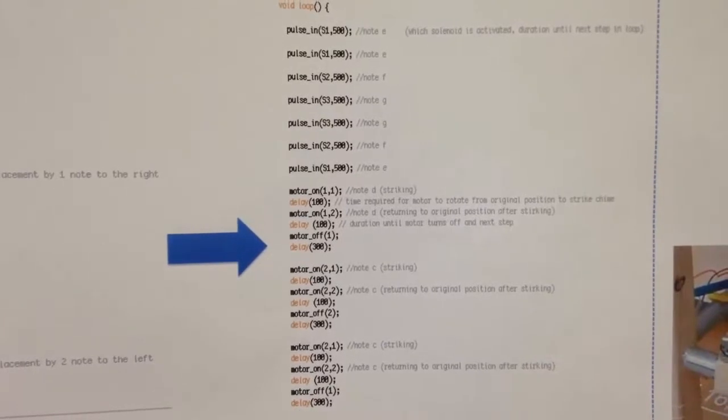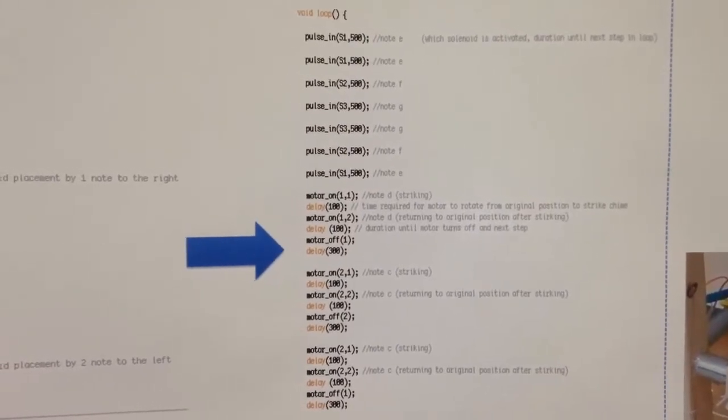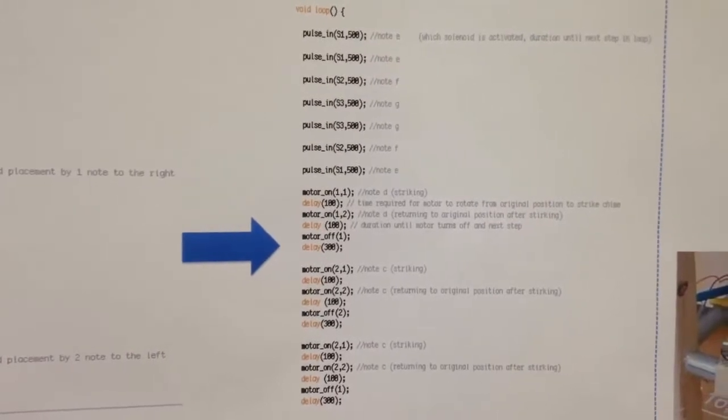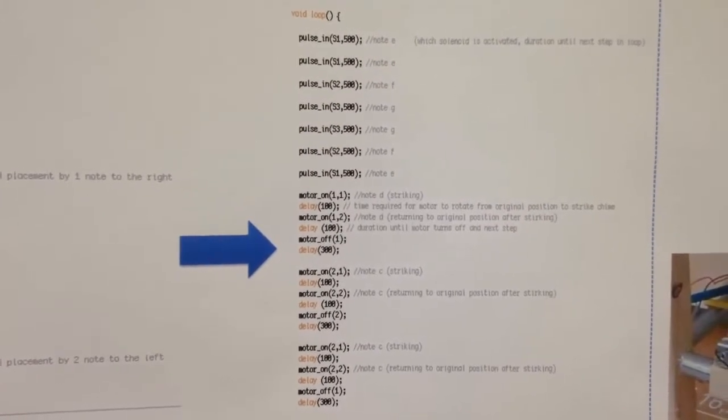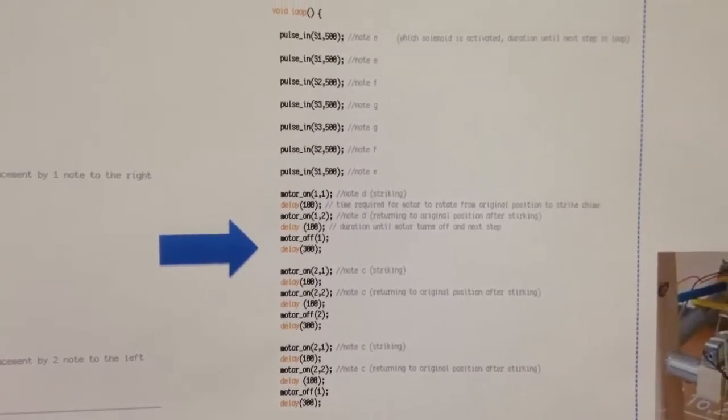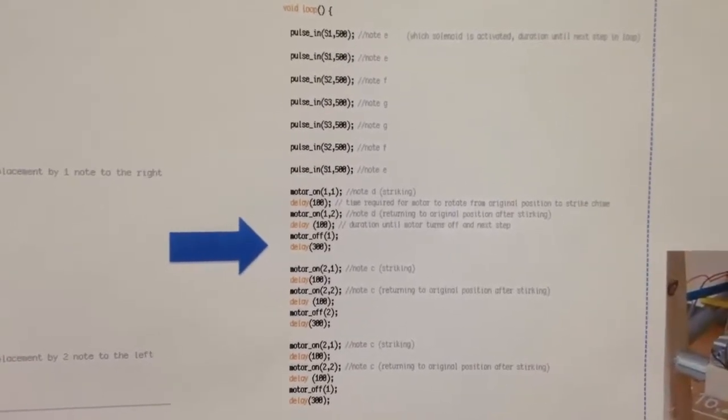We have two motors each attached with popsicle sticks to strike the chimes. When the output is one and the motor on function is commanded, the note is struck. When the output is two, the motor returns to its original position. There is a 100 millisecond delay between these functions.